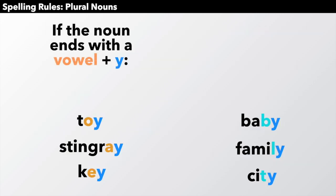Next up. Next rule. If the noun ends with a vowel plus y, you're going to just add s again. And remember the vowels are a, e, i, o, u. Toy. O is a vowel. O, y. We're just adding s.